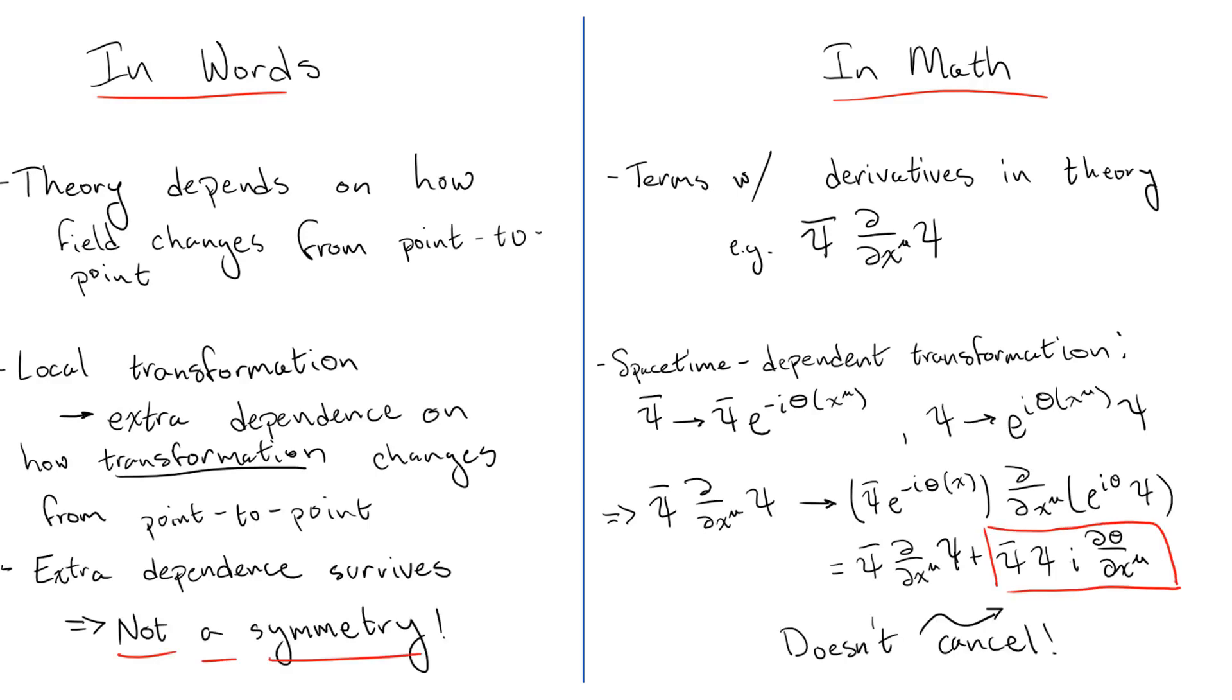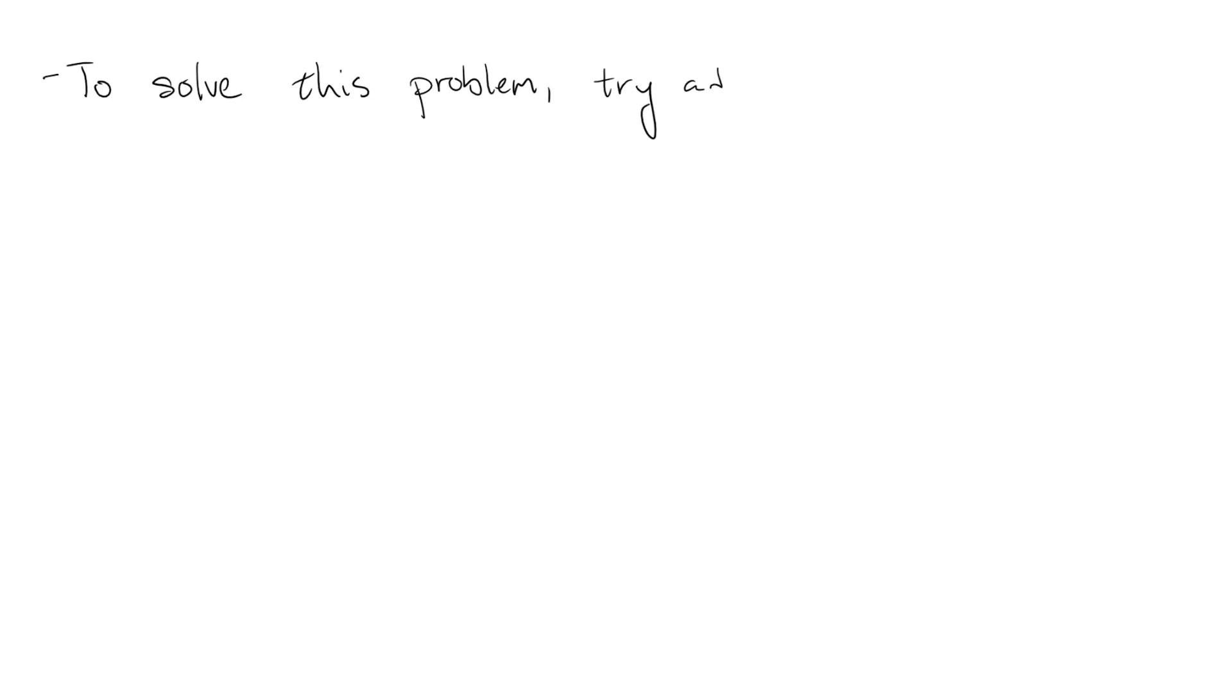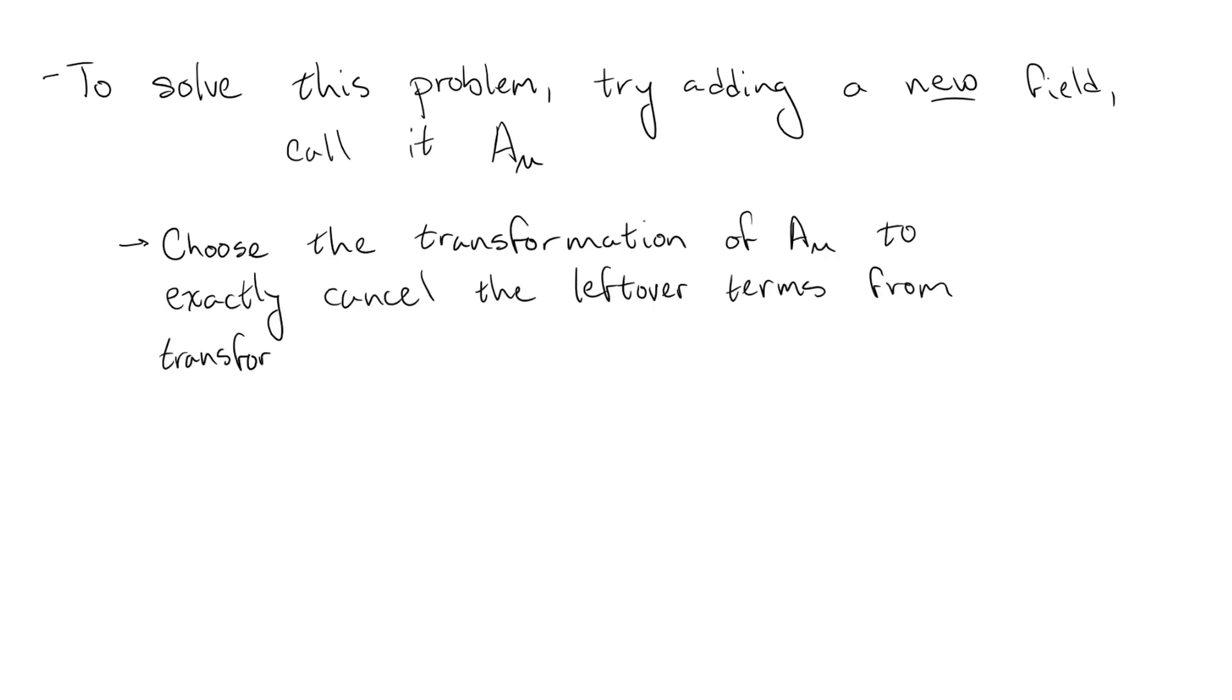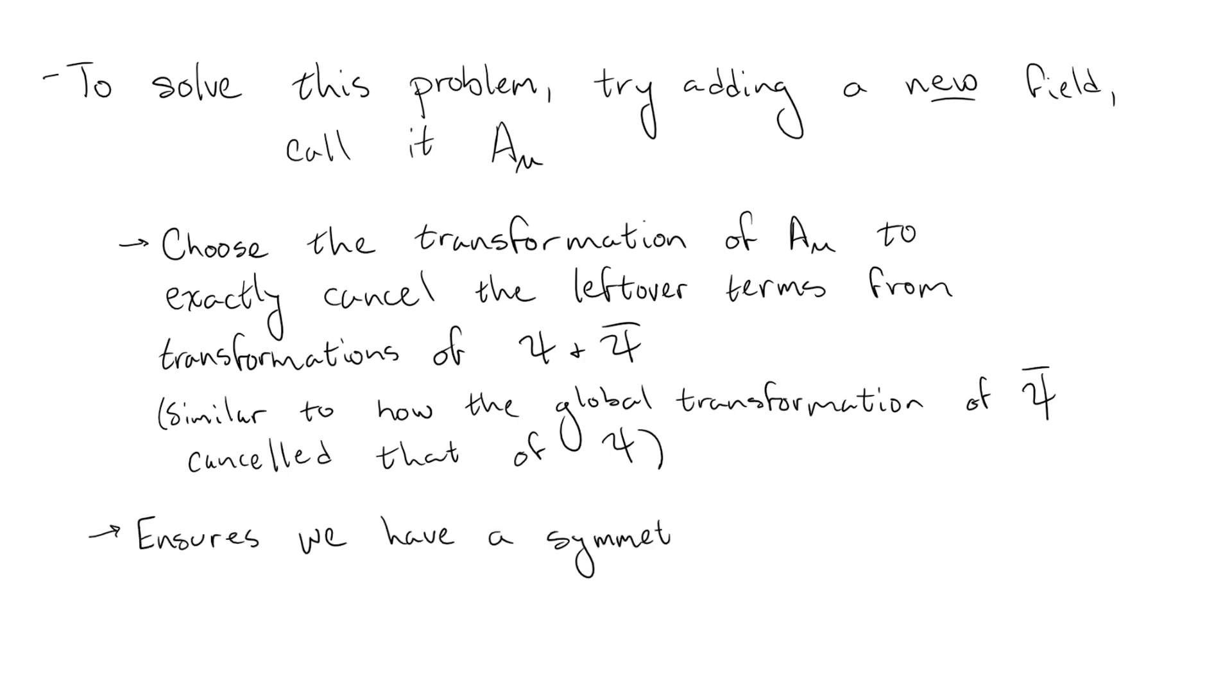How do we remedy this issue? Well, we've done what we can with the fields we started with, so why don't we try adding in a new field? Specifically, let's try adding in a new field that transforms in a way to exactly kill off the leftover terms coming from the fermion transformations. If this is the case, then the total theory with the fermions and this new field will be symmetric under this combined transformation.